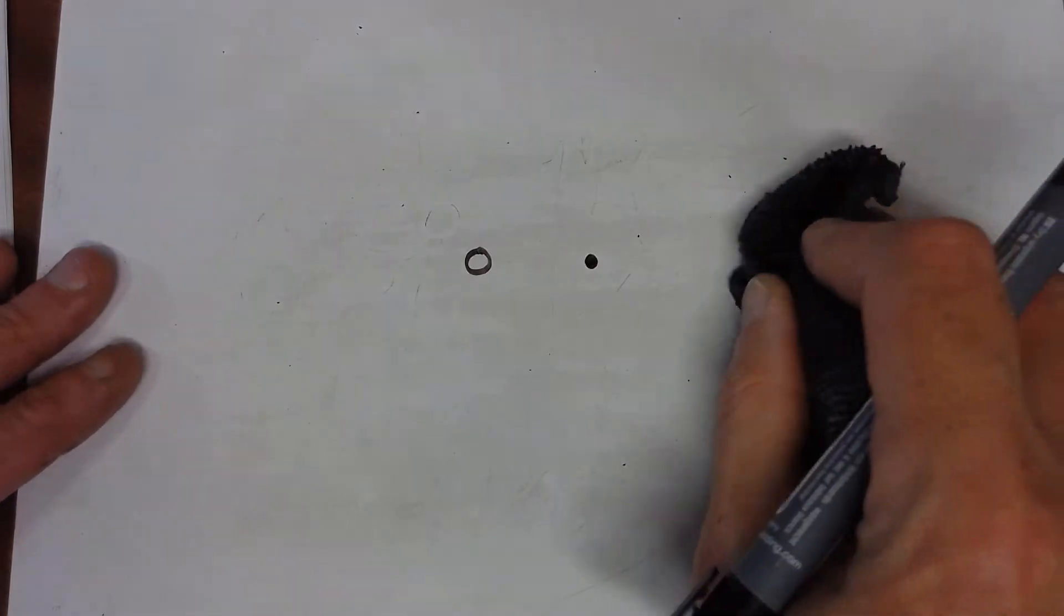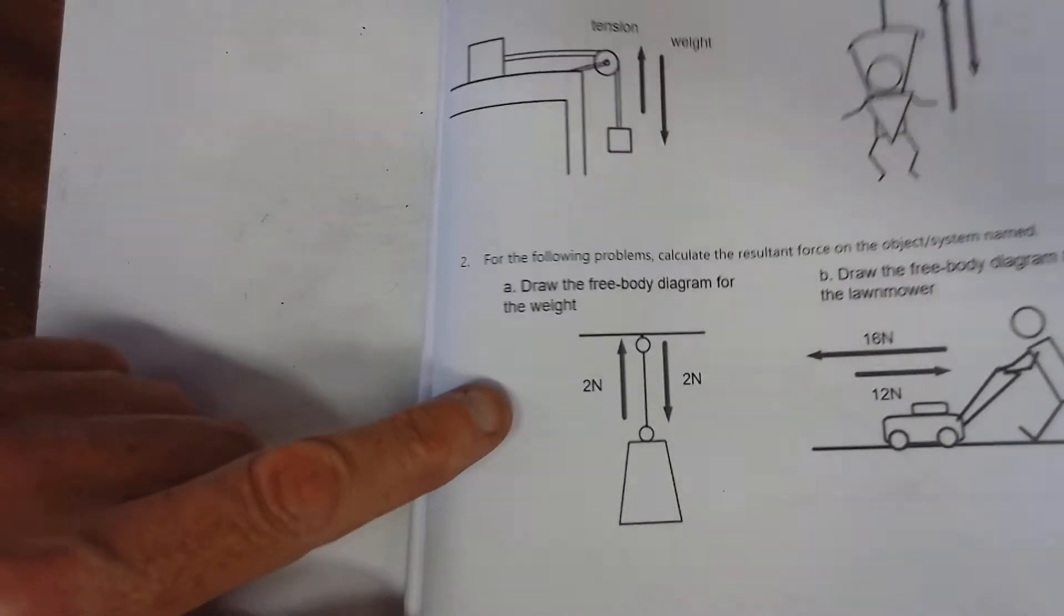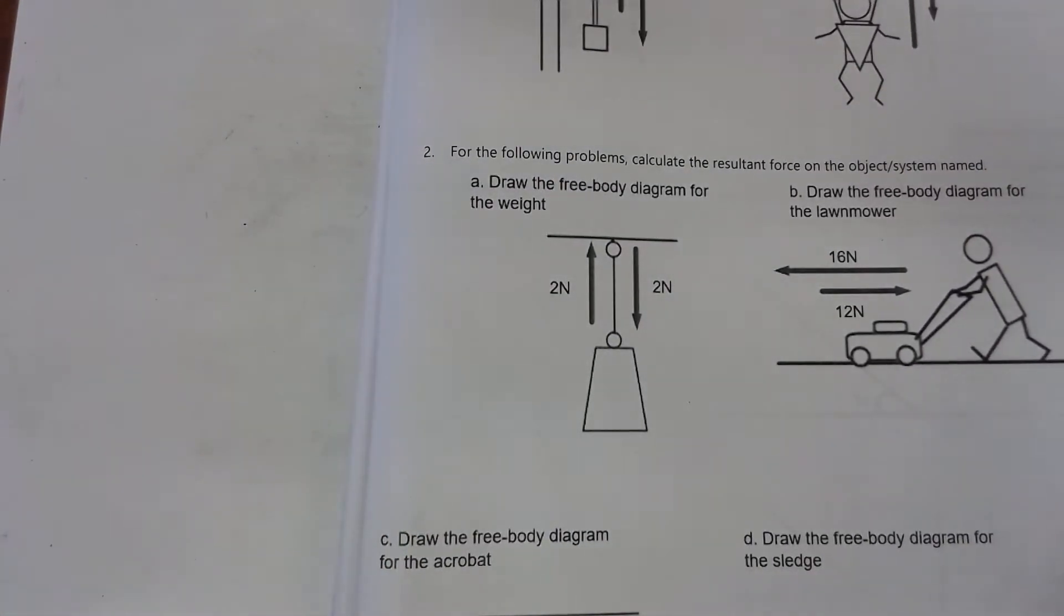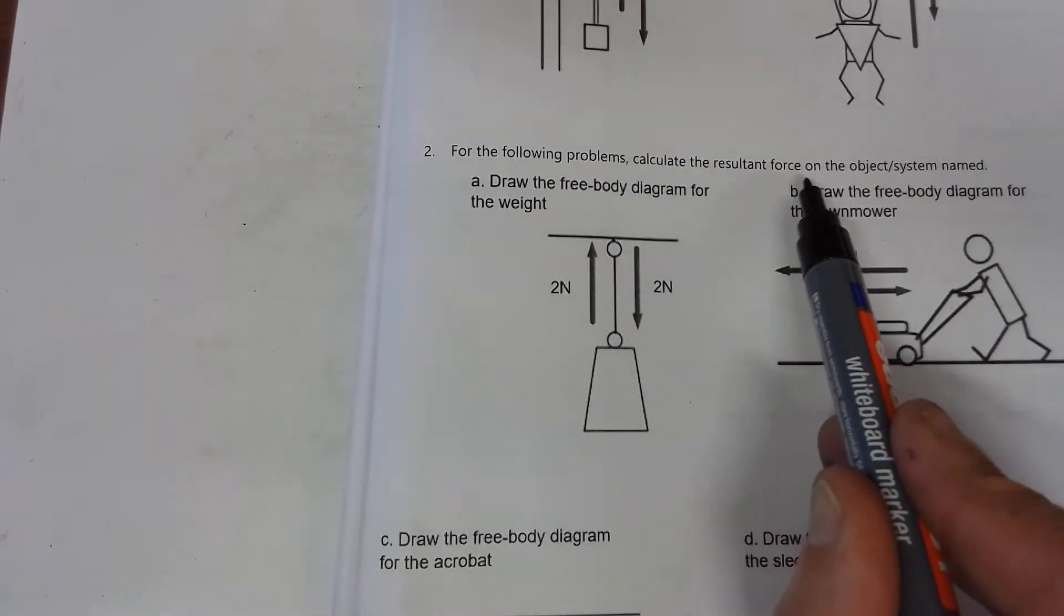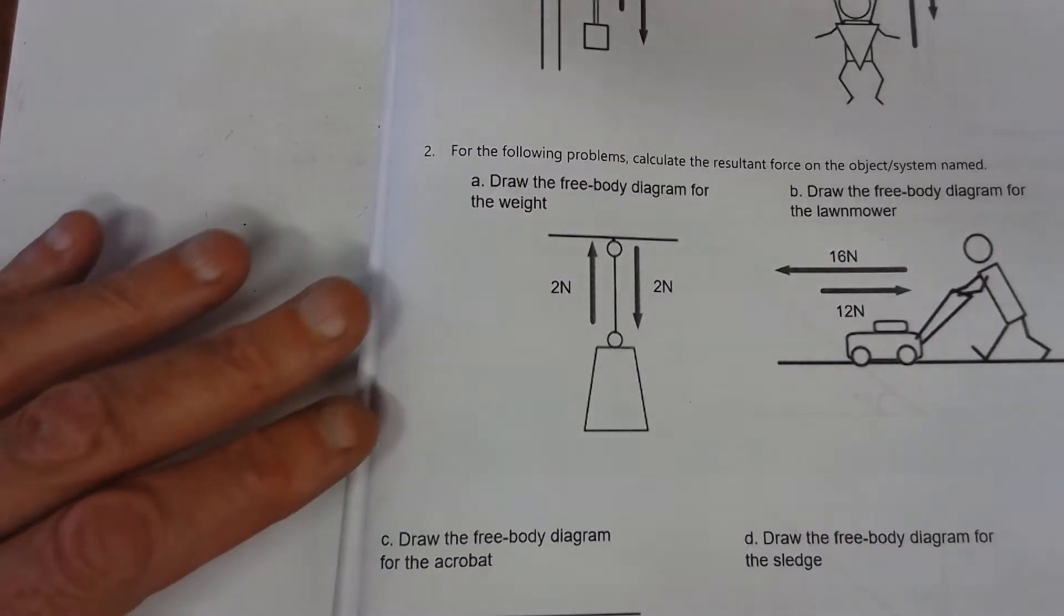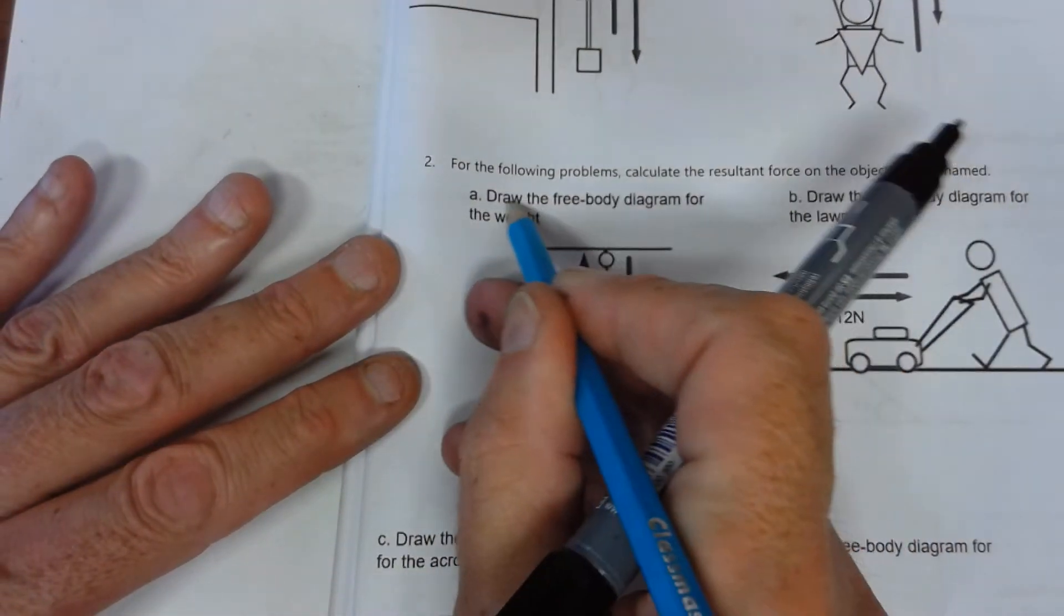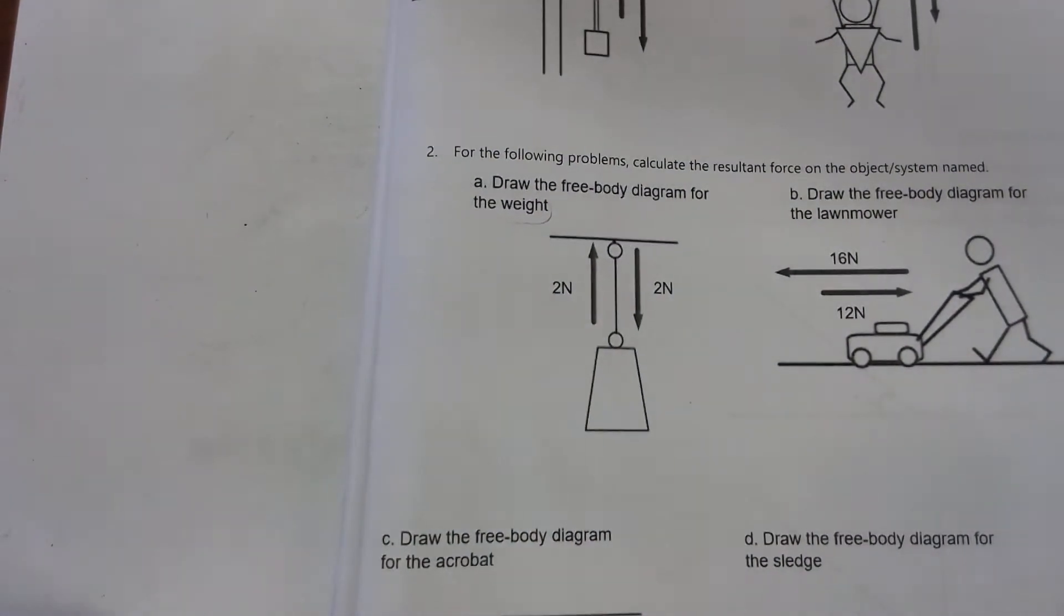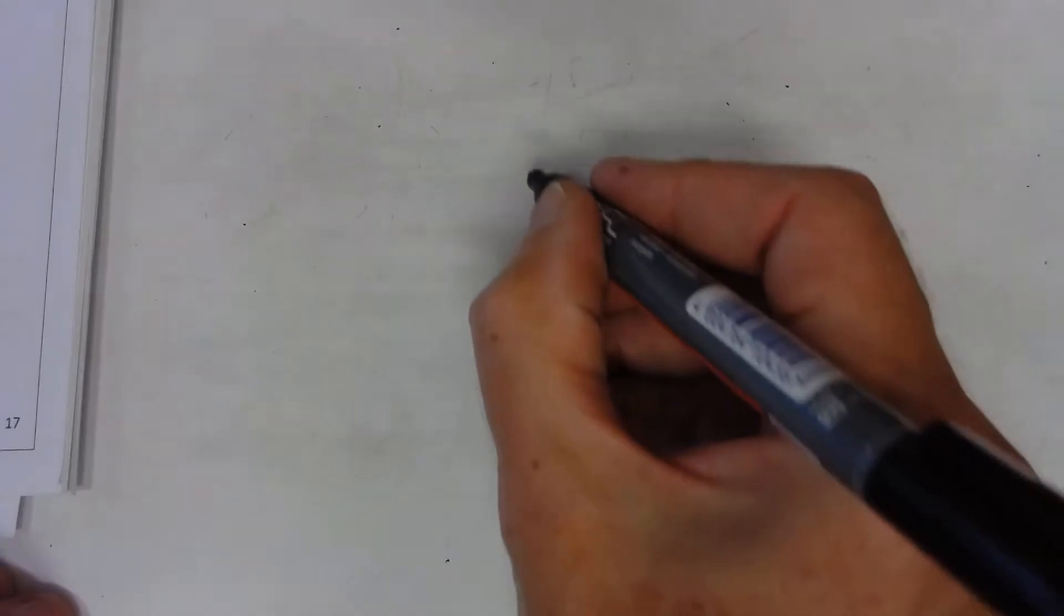So today we're going to look at drawing some of these again, and this time looking at the resultant forces. If we look at this diagram halfway down this page, we're asked to draw the free body diagram for the weight, but we're also asked to calculate the resultant force on the object or system named. The system is the whole thing, but we're looking for an object within that system. So here we're looking at the weight, or technically we could call it the mass. We're going to attempt to draw a free body diagram for that and look at the resultant force.